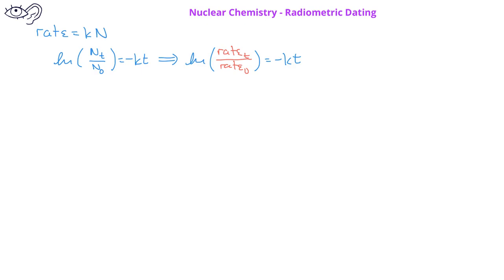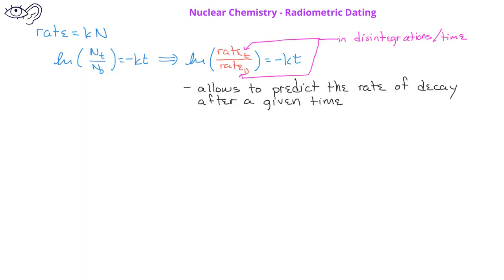In this situation, the rates are often in units of disintegrations per some unit of time. This equation allows us to determine a new rate of decay after a given amount of time. This is the basic concept used in radiometric dating, which is a technique that uses the rate of radioactive decay in a sample to determine its age.